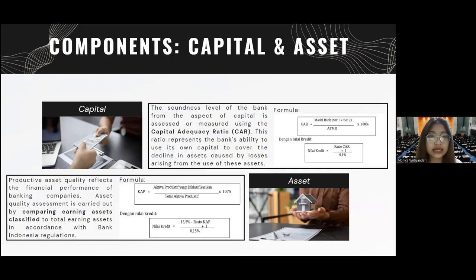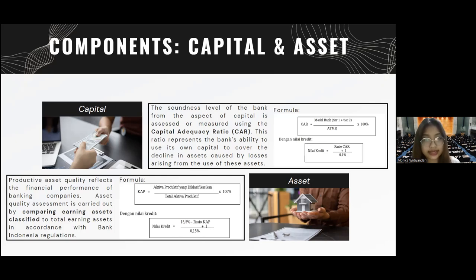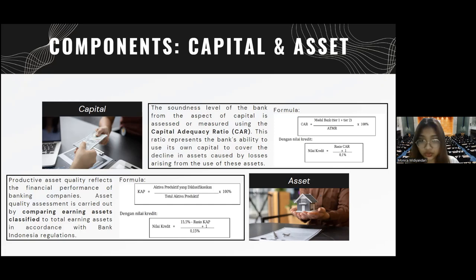Now we come to the components of CAMEL. The first is Capital. The soundness level of the bank from the aspect of capital is assessed using the Capital Adequacy Ratio (CAR). This ratio represents the bank's ability to use its own capital to cover the decline in assets caused by losses. The formula for CAR is: CAR = (Modal Bank Tier 1 + Tier 2) / ATMR × 100%.